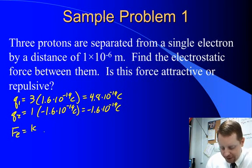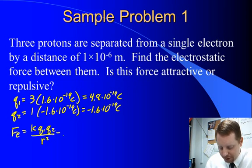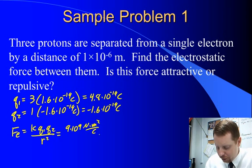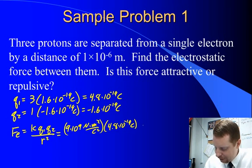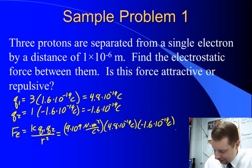So, when we use Coulomb's law, electrostatic force is K times Q1 times Q2 over R squared, or 9 times 10 to the ninth newton meters squared per coulomb squared, times 4.8 times 10 to the minus 19 coulombs, times negative 1.6 times 10 to the minus 19 coulombs,